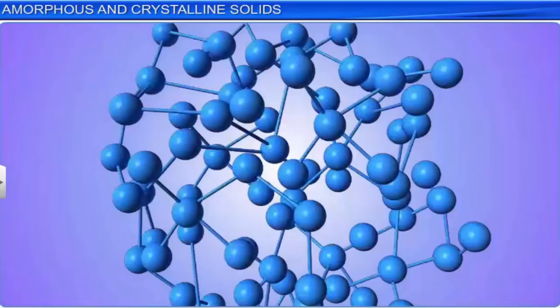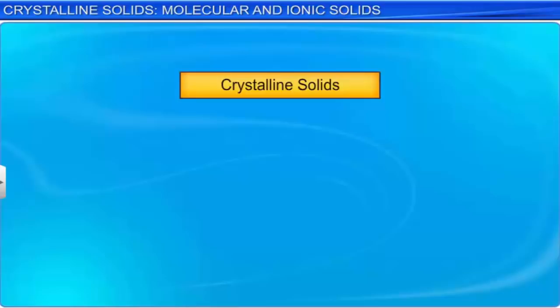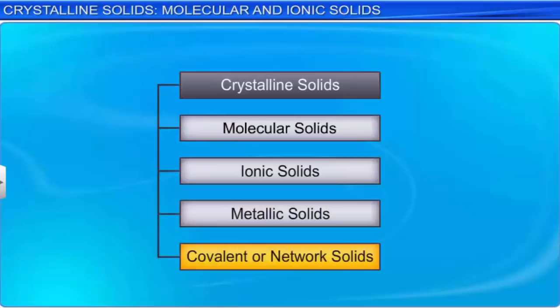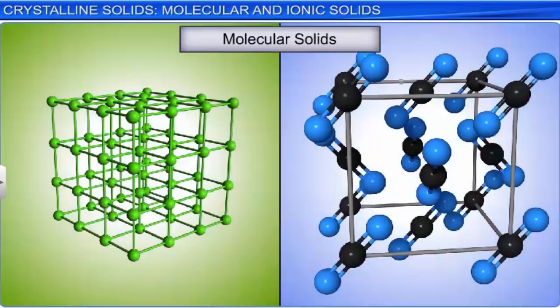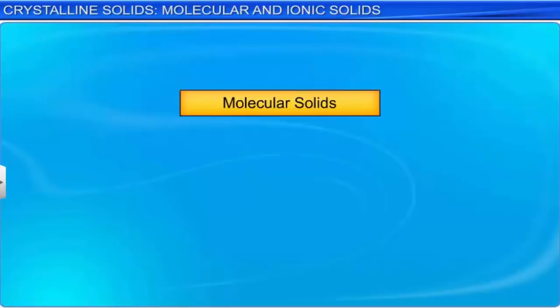On the basis of the type of forces holding the constituent particles together, crystalline solids are broadly classified into molecular solids, ionic solids, metallic solids, and covalent or network solids. Molecular solids are further divided on the basis of intermolecular forces into non-polar molecular solids, polar molecular solids, and hydrogen-bonded molecular solids.